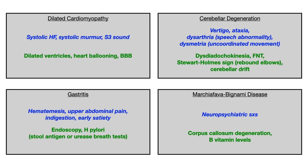For cerebellar degeneration, you'll have cerebellar symptoms: vertigo, ataxia, dysarthria, and dysmetria. Exam findings include dysdiadochokinesia, finger-to-nose testing, and Stewart-Holmes sign — basically rebound elbows or cerebellar drift. Long-term alcohol use definitely results in cerebellar degeneration. For gastritis, you'll see hematemesis, upper GI pain, indigestion, and early satiety. If going toward imaging or labs, they'll give you images from an endoscopy or results of H. pylori testing — usually the stool antigen or urease breath test.